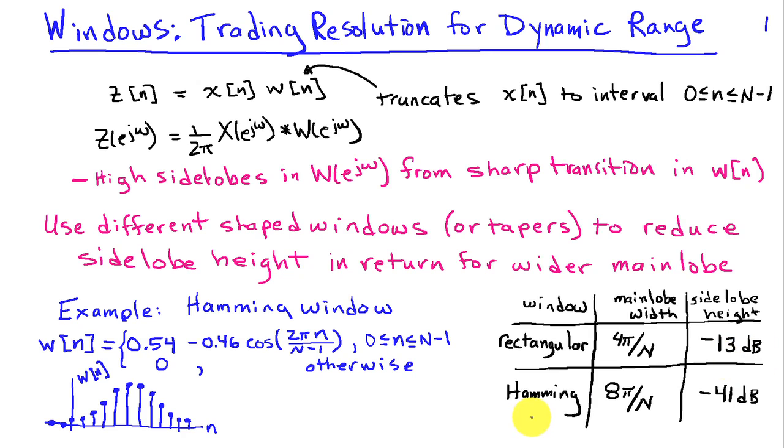In contrast, the hamming window has a doubling of the main lobe width, so we've lost resolution here, but the peak side lobe is down 41 dB relative to the main lobe.